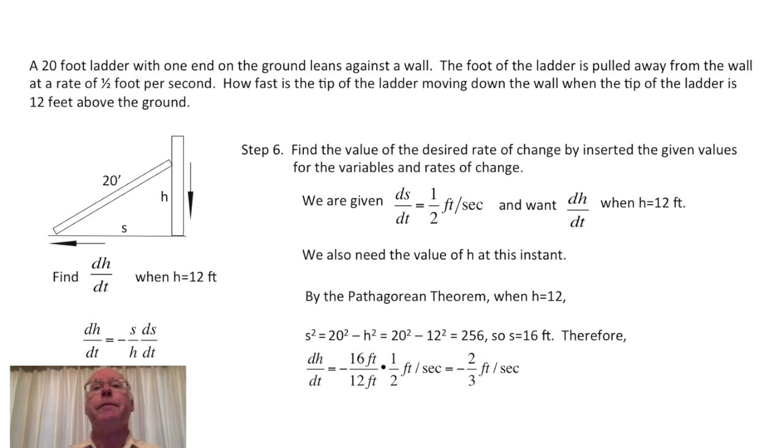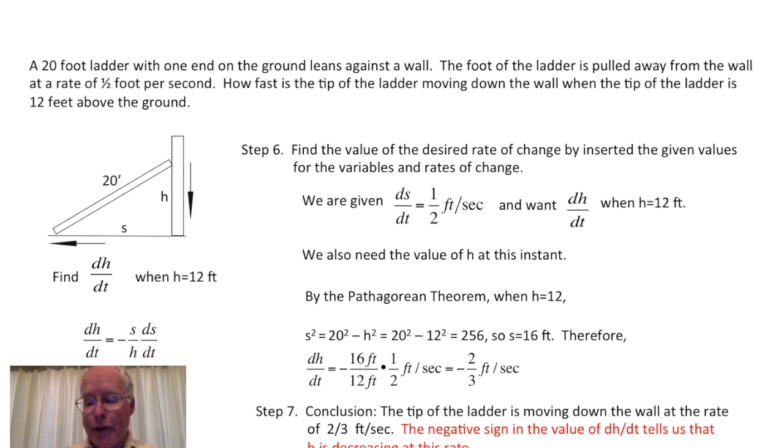Our last important step, step seven, is to interpret our answer. We're asked to find how fast the tip of the ladder is moving down the wall. Our conclusion might be stated like this: The tip of the ladder is moving down the wall at a rate of two-thirds foot per second. We've eliminated the negative sign. The two-thirds foot per second is the speed, which was asked for, and tells us how fast the ladder is moving. The negative sign tells us that h is decreasing at this instant, that h is getting smaller. This is consistent with the fact that the tip of the ladder is moving down the wall. You can add another sentence to further clarify this, and note that the negative sign in the value of dh/dt tells us that h is decreasing at this rate. And we are done.